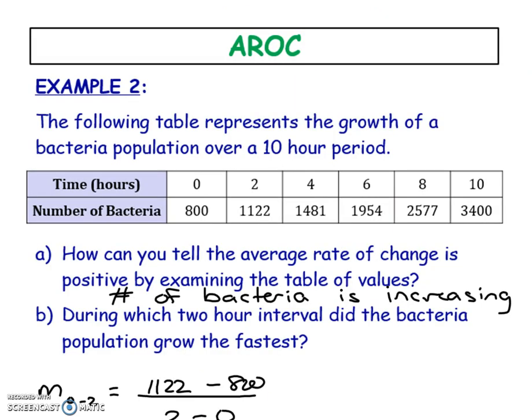Another way that you could see this type of information is not through a graph, but through a table. You have a table of X and Y values. In this case, we're talking about bacterial growth over time. The first question is going to ask you, how can you tell the average rate of change is positive by examining the table of values? In other words, how do you know that your bacteria is growing in number? We can just take a look. Obviously, the numbers are going up, so the number of bacteria is increasing, and that's how we know that we have a growth rate versus a decay.